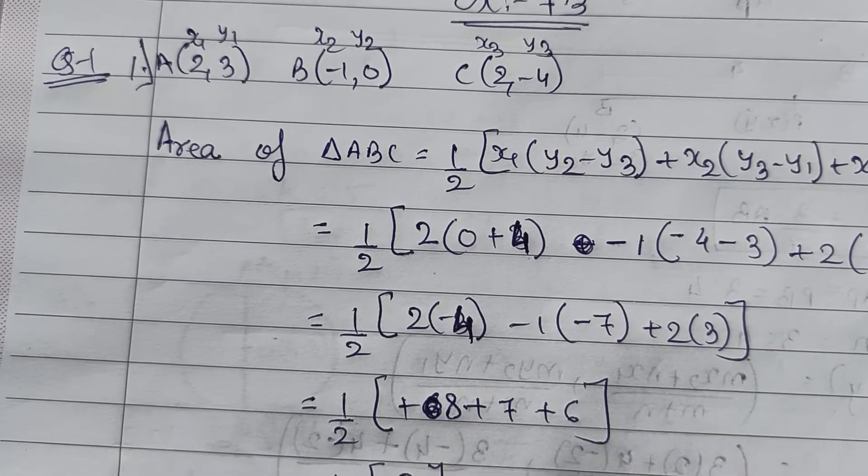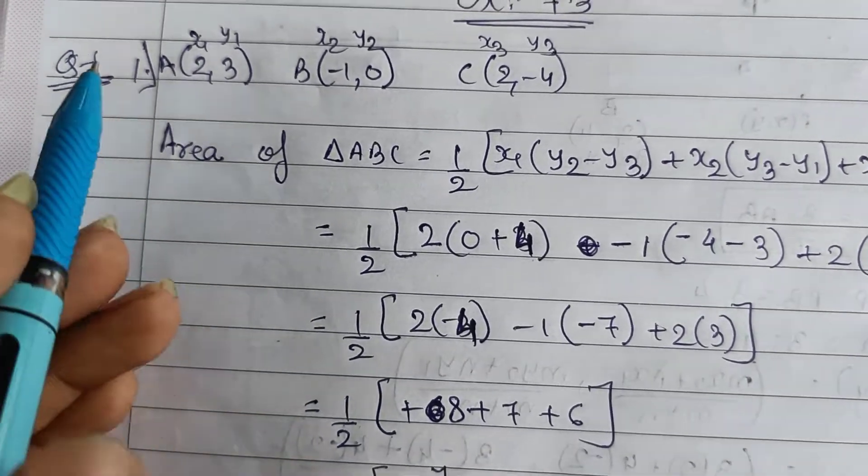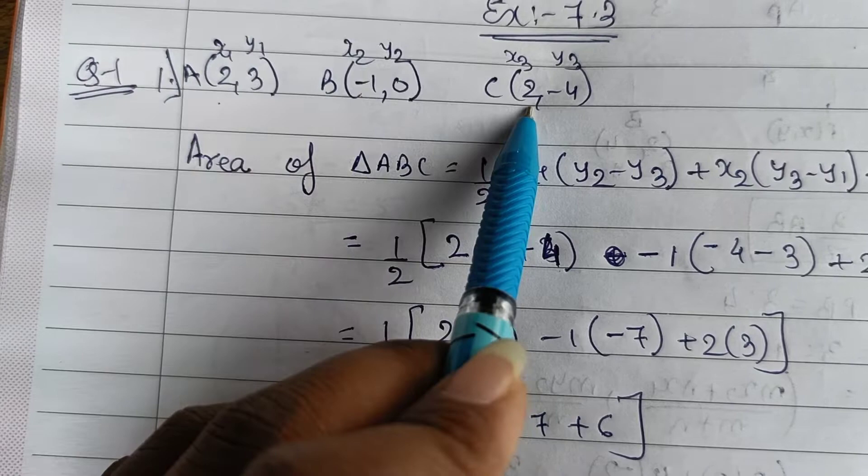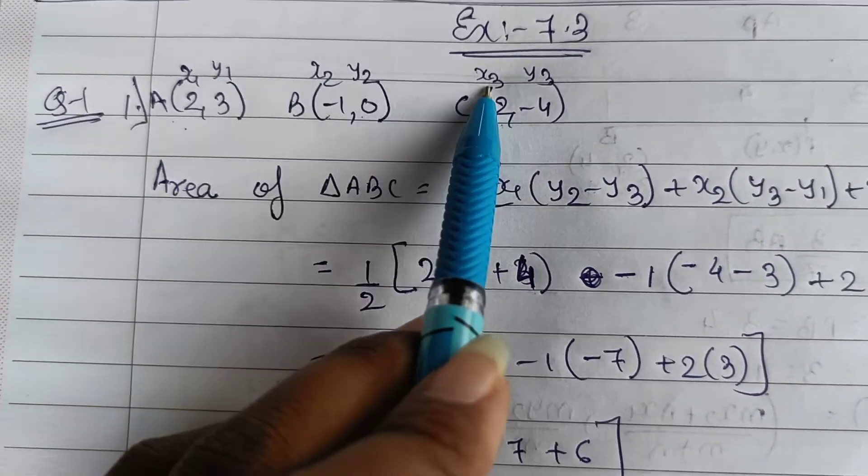Question number 1. In question number 1 you are having 2 questions. I am doing the first and you will have to do the second one. Now see, question number 1 we are provided with 3 vertices, that is a, b and c. Mark them as x1, y1, x2, y2 and x3, y3.